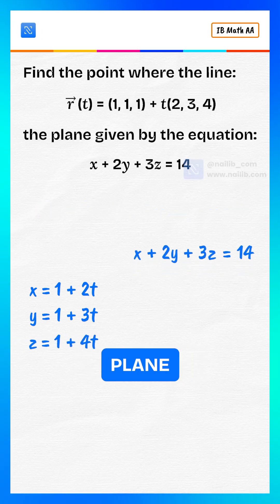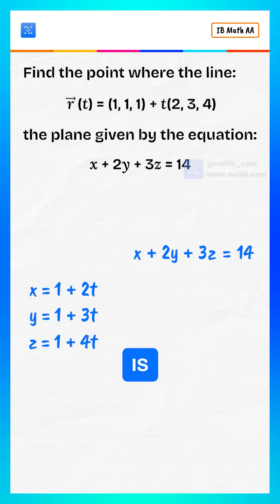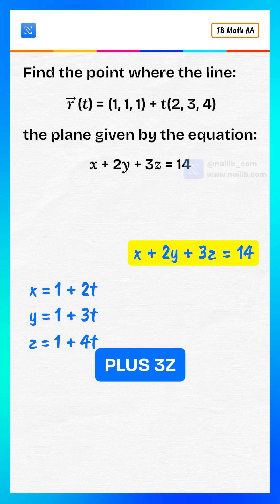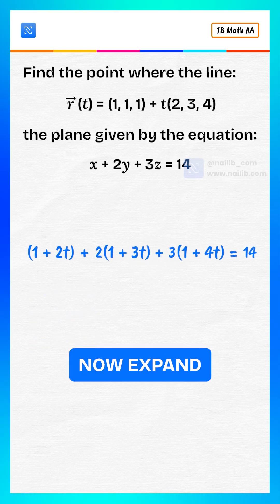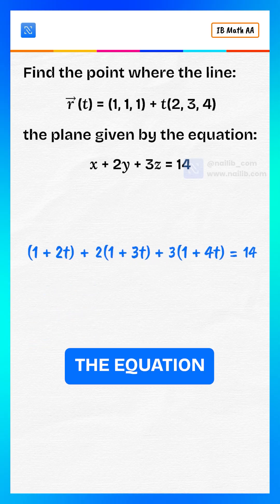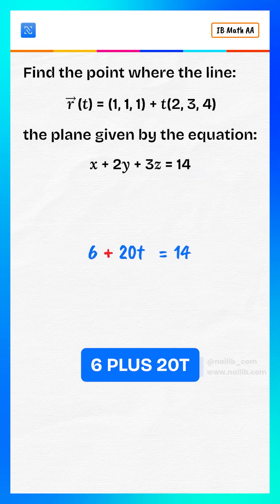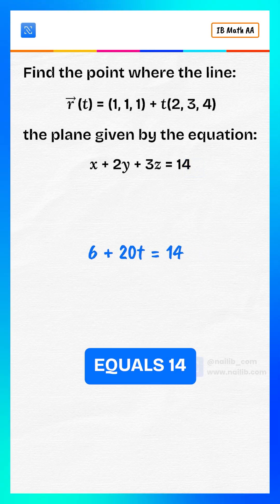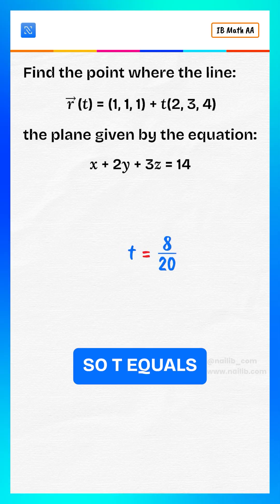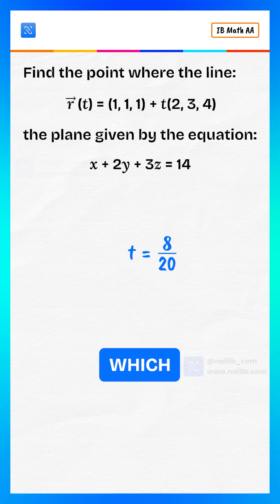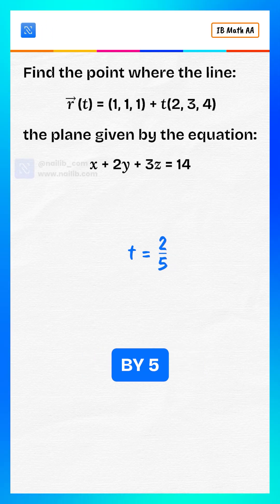Now substitute into the plane equation. The plane is x plus 2y plus 3z equals 14. Substitute the expressions. Expand and simplify, the equation becomes 6 plus 20t equals 14. Subtract 6 from both sides. 20t equals 8. So t equals 8 divided by 20, which simplifies to 2 divided by 5.